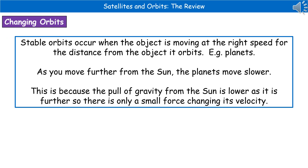If an object is moving at the right speed for the distance at which it's orbiting, it has a stable orbit — like our planets. The distance they are from the sun and their speed holds them in a stable orbit so we don't crash into each other or the sun. The further from the sun we go, the slower the planets are actually moving, because the pull of gravity from the sun is lower at greater distances. So there's only a small force changing the planet's velocity.